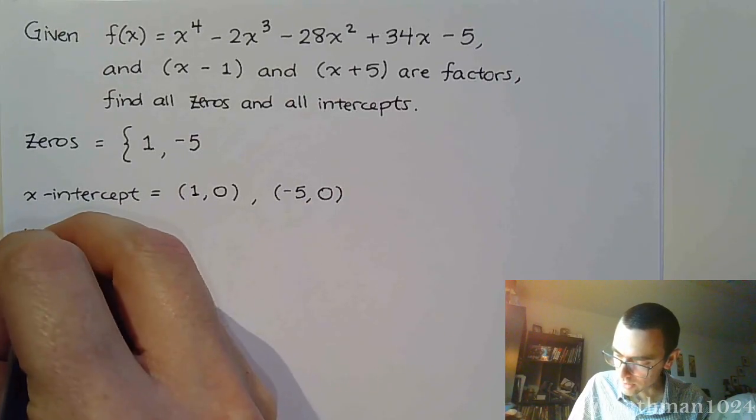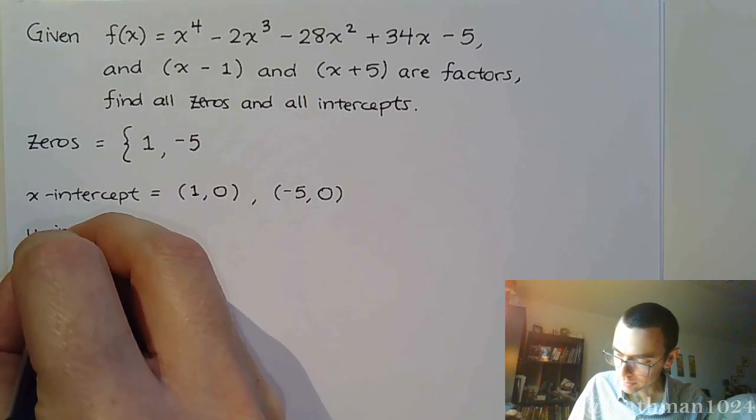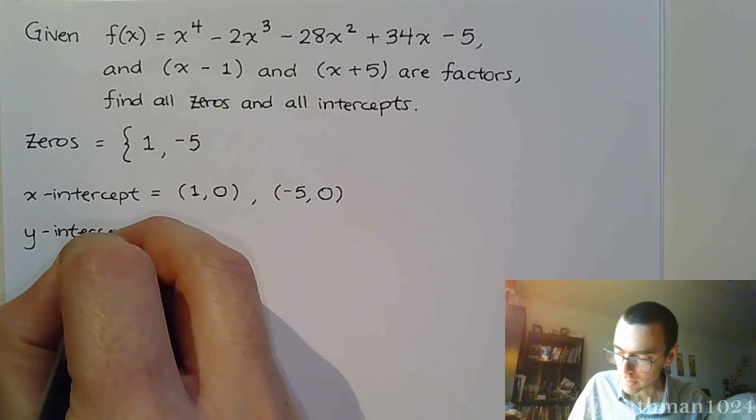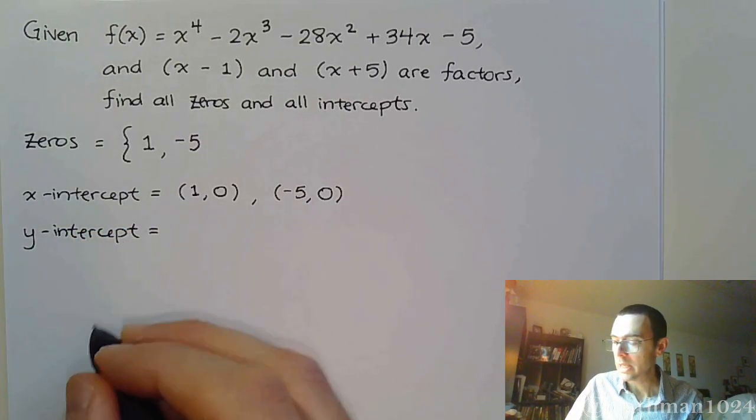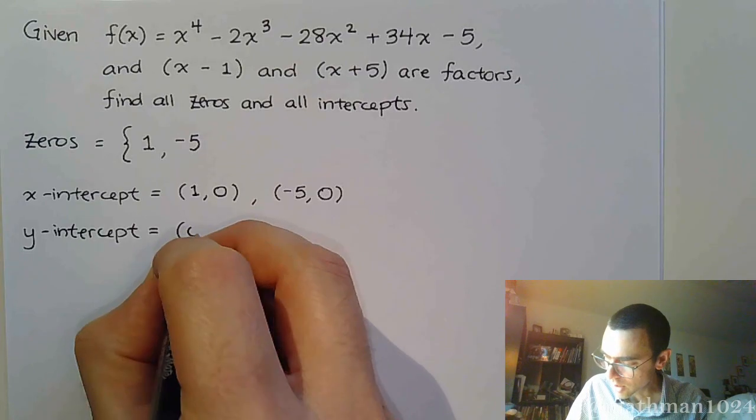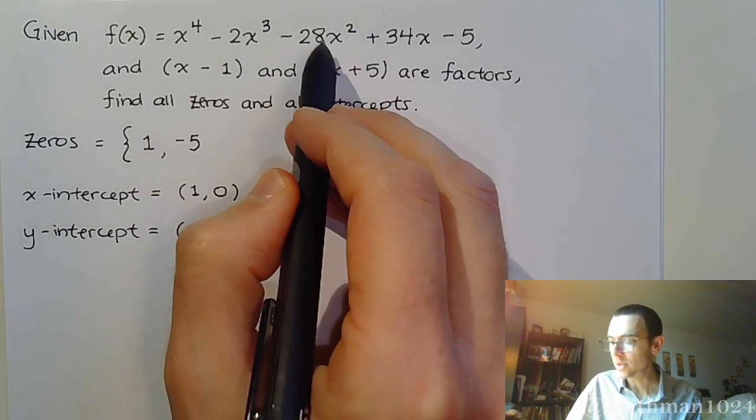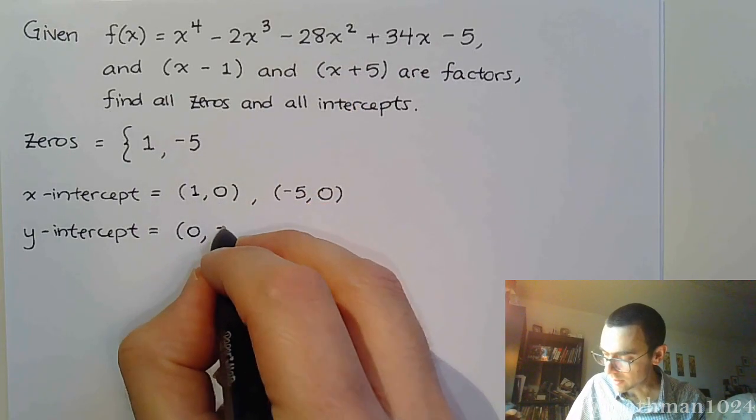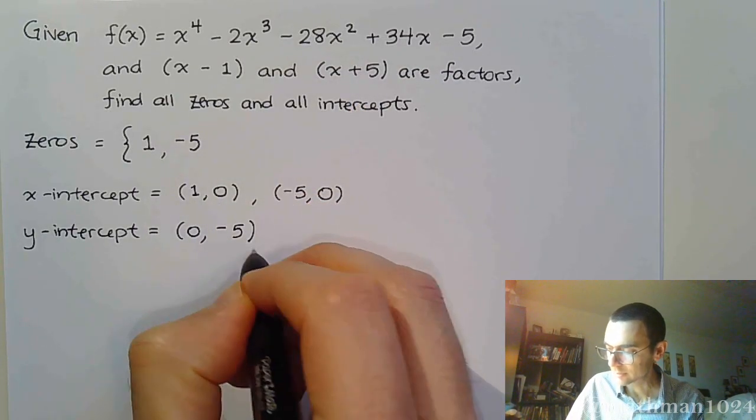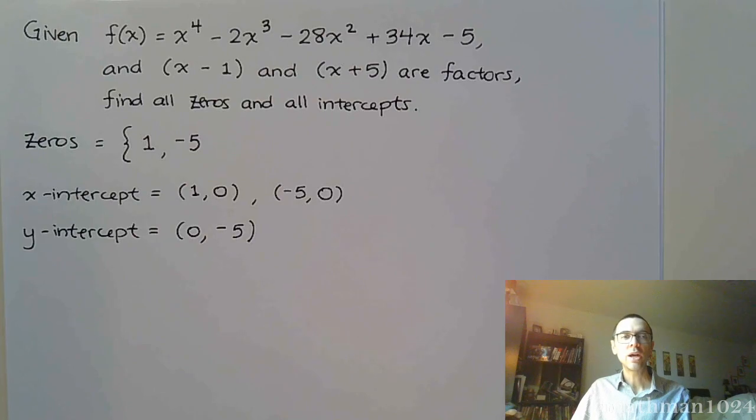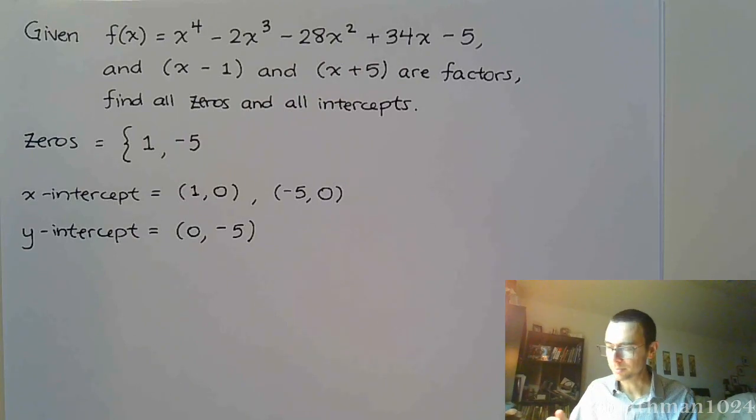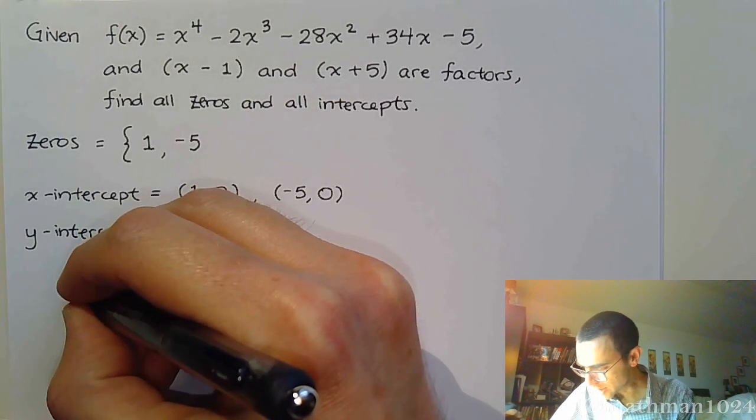The y-intercept. Every polynomial function is going to have a y-intercept, and they're all going to look like this, 0 comma something. And here, when you plug in 0, the only thing that's going to be left is negative 5. So now this is where I do synthetic division to try to break this down to go from degree 4 to degree 2. Let's go ahead and get started with that.